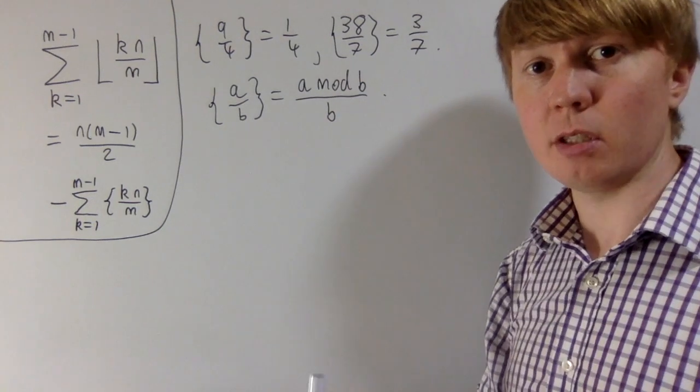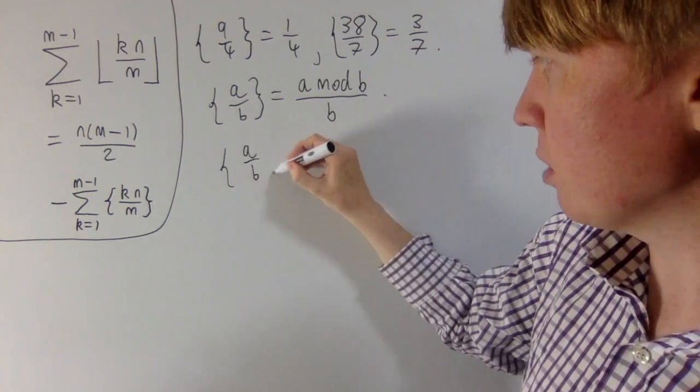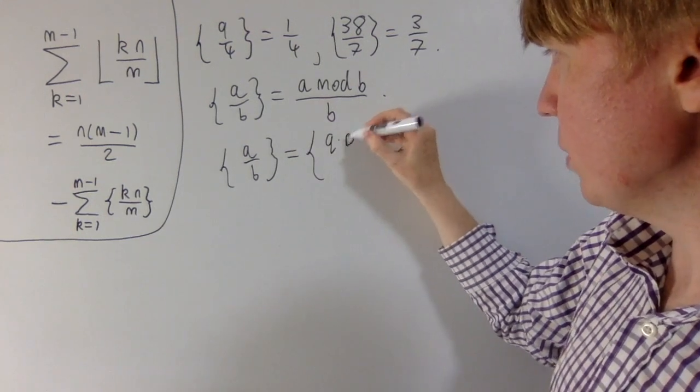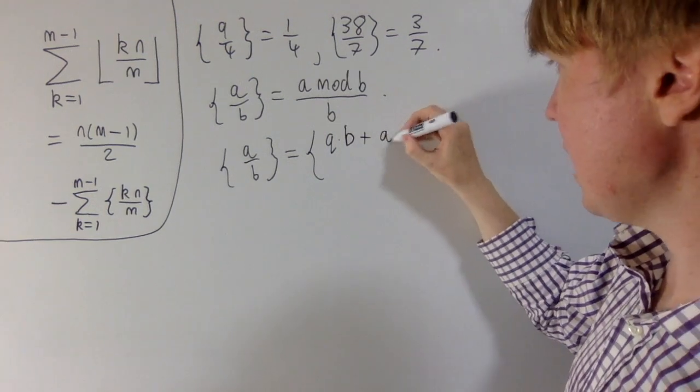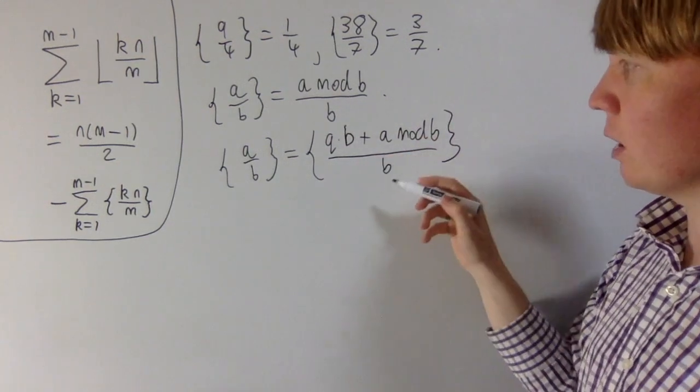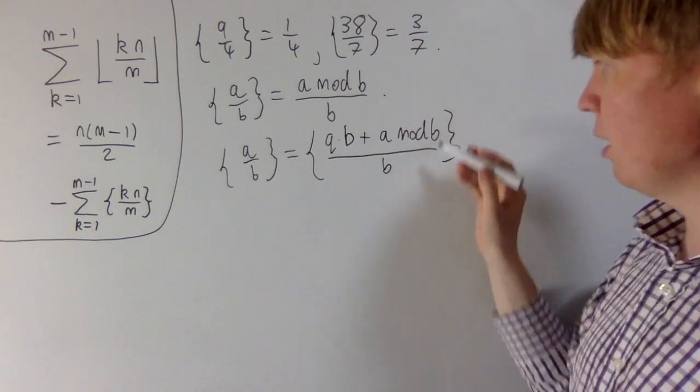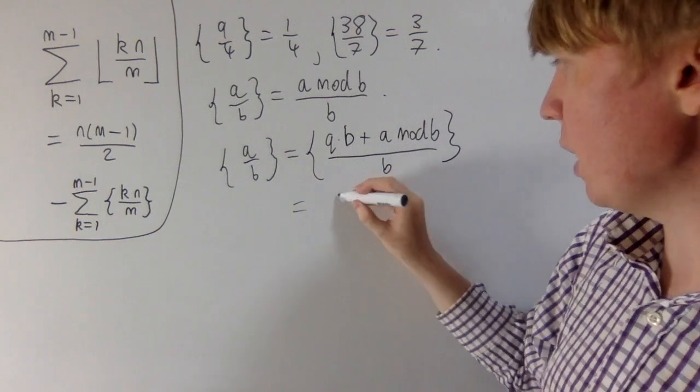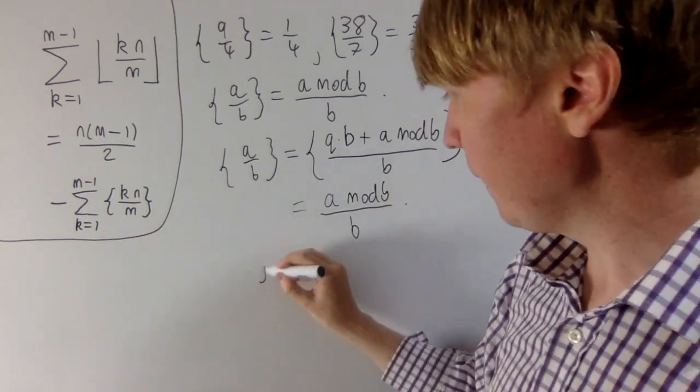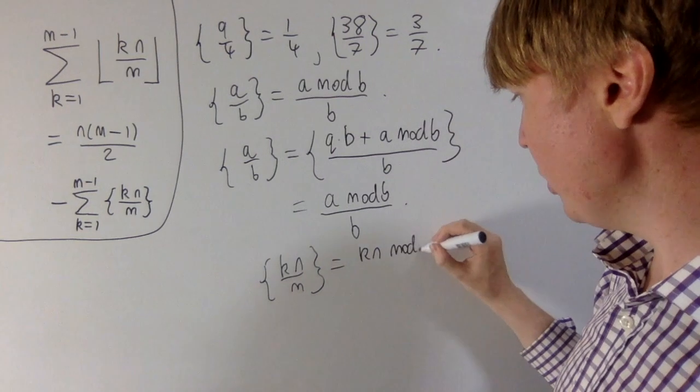And we can understand this more rigorously because the fractional part of a divided by b, if we're dividing a by b, you'll have some quotient multiplied by b plus your remainder part, which is just a mod b, all divided by b. We're looking for the fractional part of all of this. q times b divided by b gives us an integer, then a mod b divided by b gives us a fraction less than 1, because a mod b is always less than b. So this tells us why we can write this as a mod b all divided by b. The upshot is we can write the fractional part of kn over m as kn mod m, all divided by m.